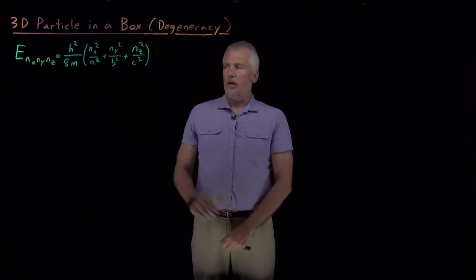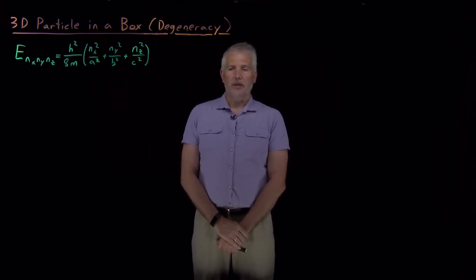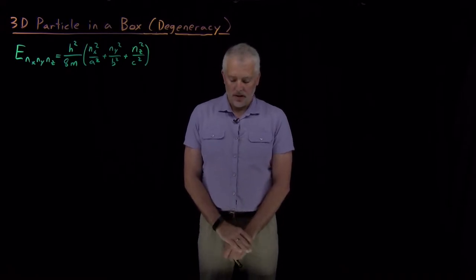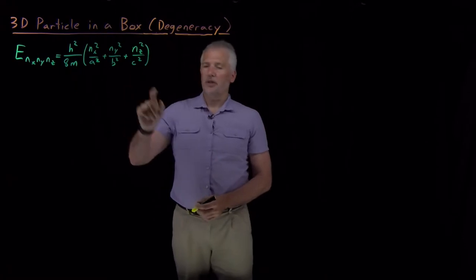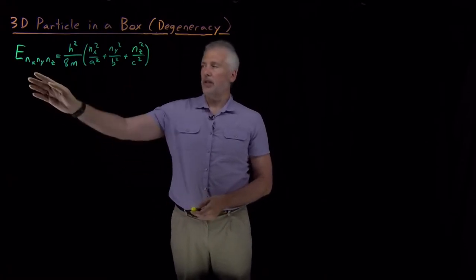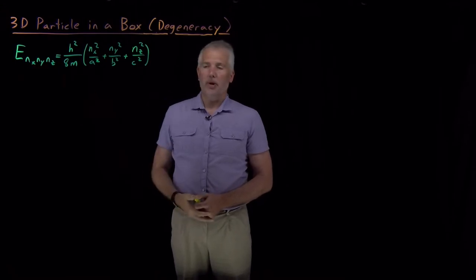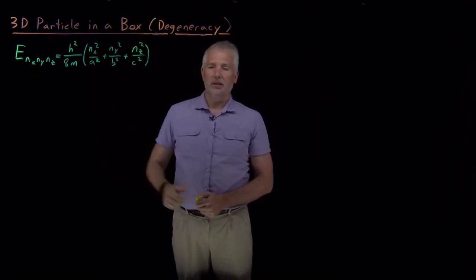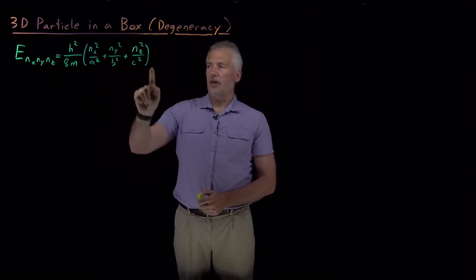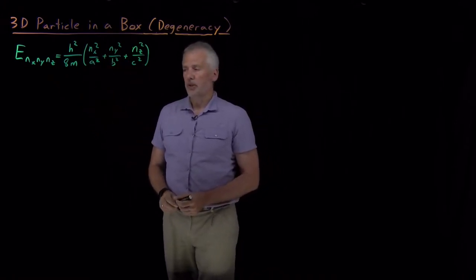One important feature to be aware of in the energy levels for a 3D particle in a box is the degeneracy of those energy levels. To understand that, let's pay closer attention to the expression we have for what the energy levels are. If I choose n_x, n_y, n_z — some integer values — I can calculate the energy of that particle in that three-dimensional box.